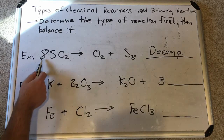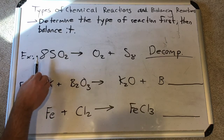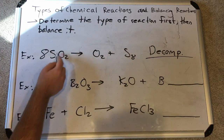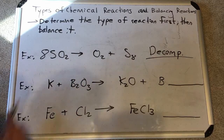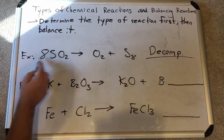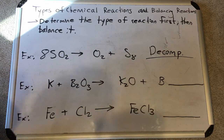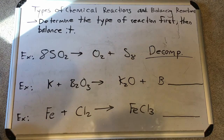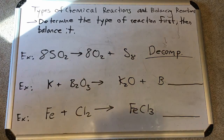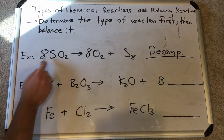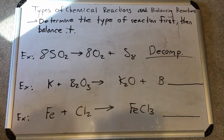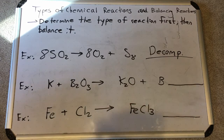Adding coefficient 8 to SO2 affects all atoms in the compound, so now there are 8×2 = 16 oxygens on the reactant side. But there are only 2 oxygens (in O2) on the product side. We multiply O2 by 8 to get 16. Double-checking: eight sulfurs on each side and sixteen oxygens on each side — it is now balanced.